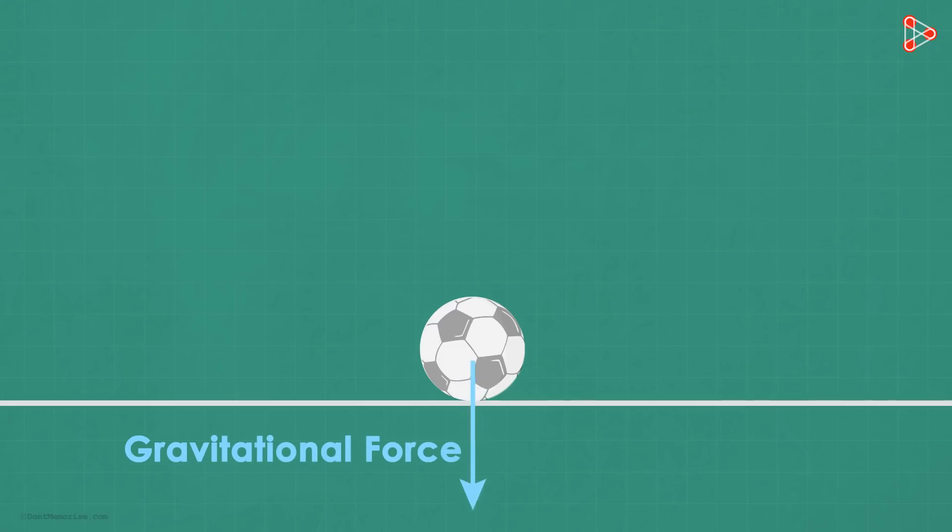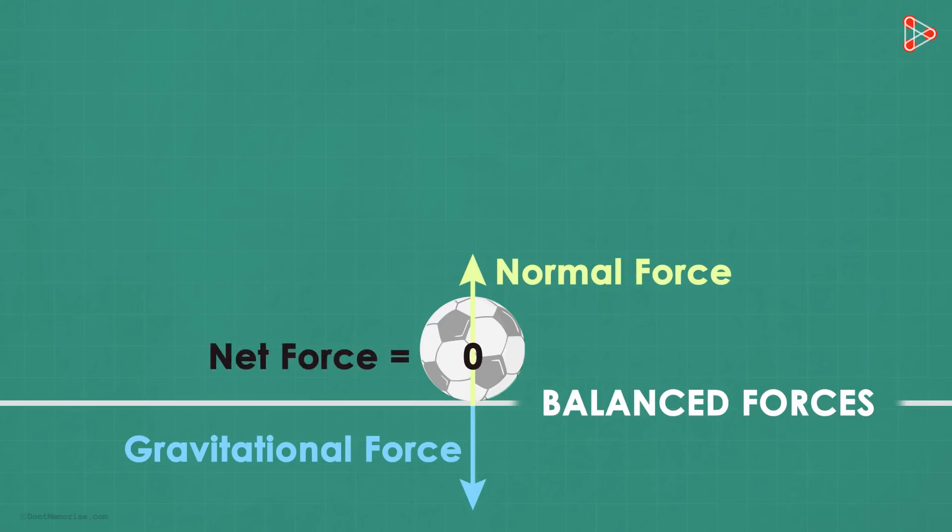And the ground is applying an equal force exactly in the opposite direction. This force is called the normal force. Because these two forces are balanced, they do not change the position of an object. The net force acting on the ball is zero.